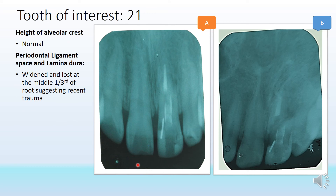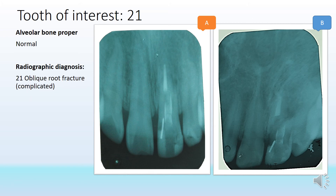The height of the alveolar crest appears largely normal. The PDL and lamina dura are somewhat confusing in the fracture area — since the fracture is extending onto the root, there is disturbance of the lamina dura and PDL, with widening and loss in the middle one-third of the root, suggestive of recent trauma as the area appears discontinuous.